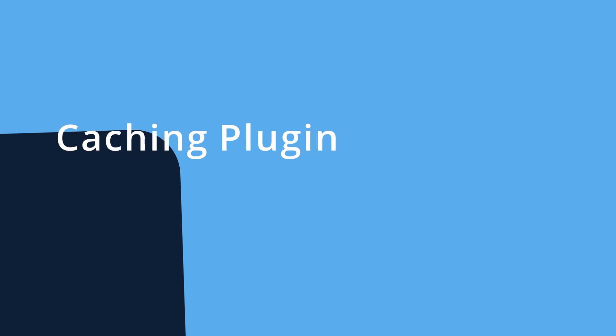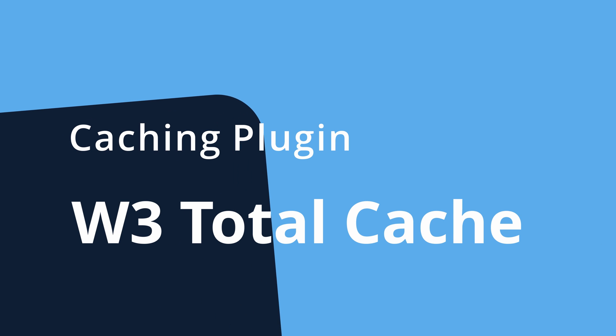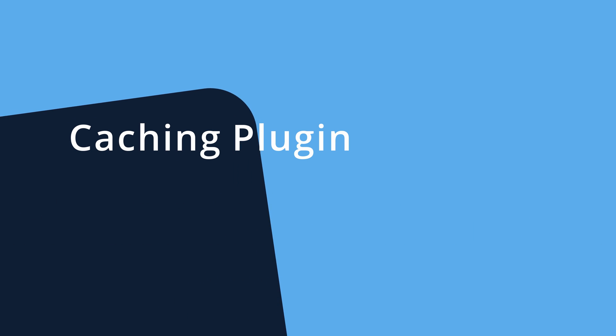So with that out of the way, let's go ahead and finally talk about plugins. Like I mentioned, there are three types of plugins that pretty much every WordPress website should have. Those are caching, image optimization, and cutting the fat. Let's start with caching, and the caching plugin that I use and recommend is W3 Total Cache.